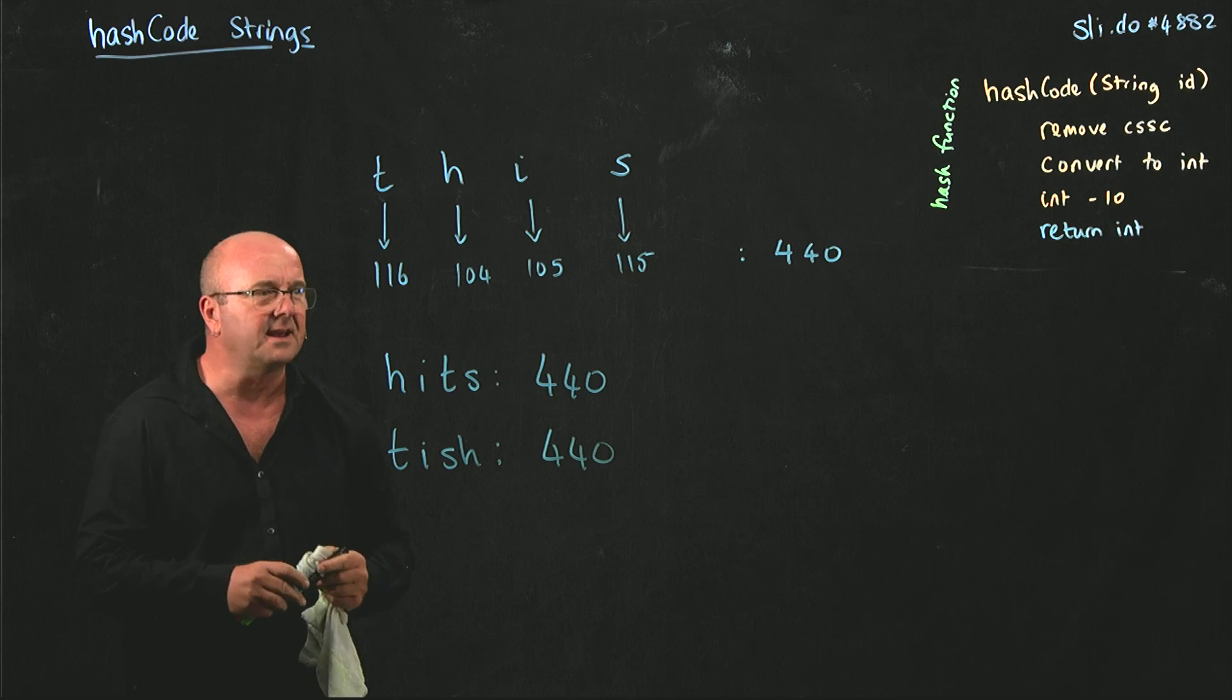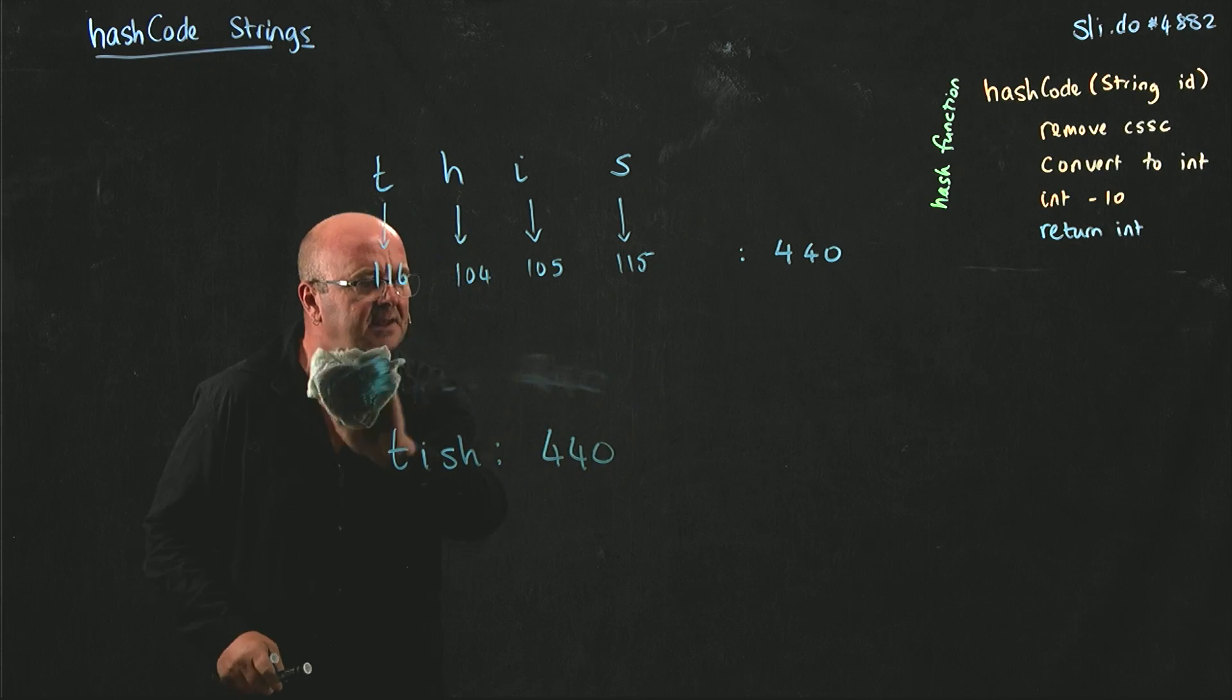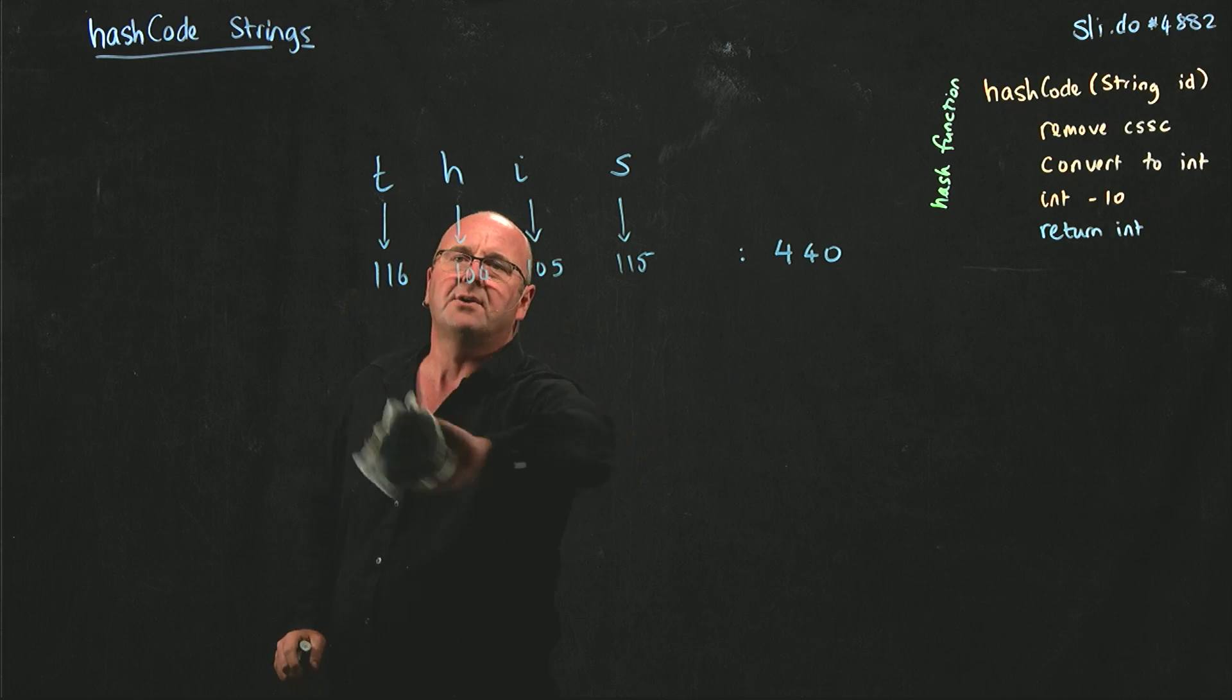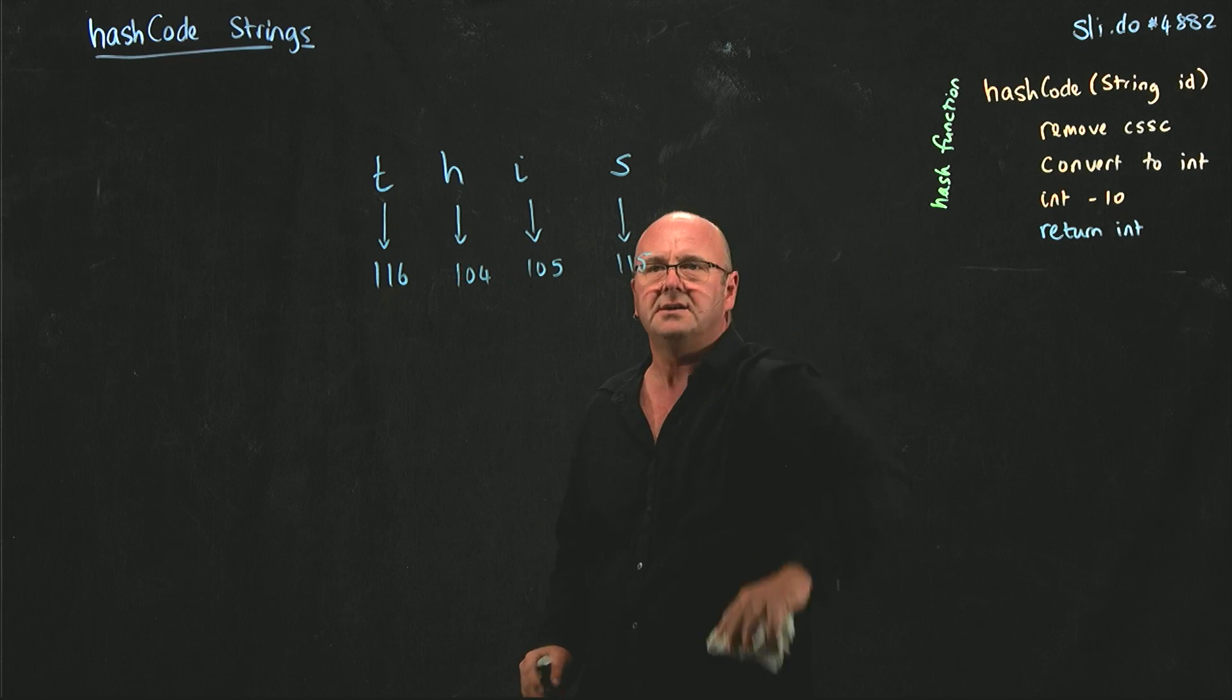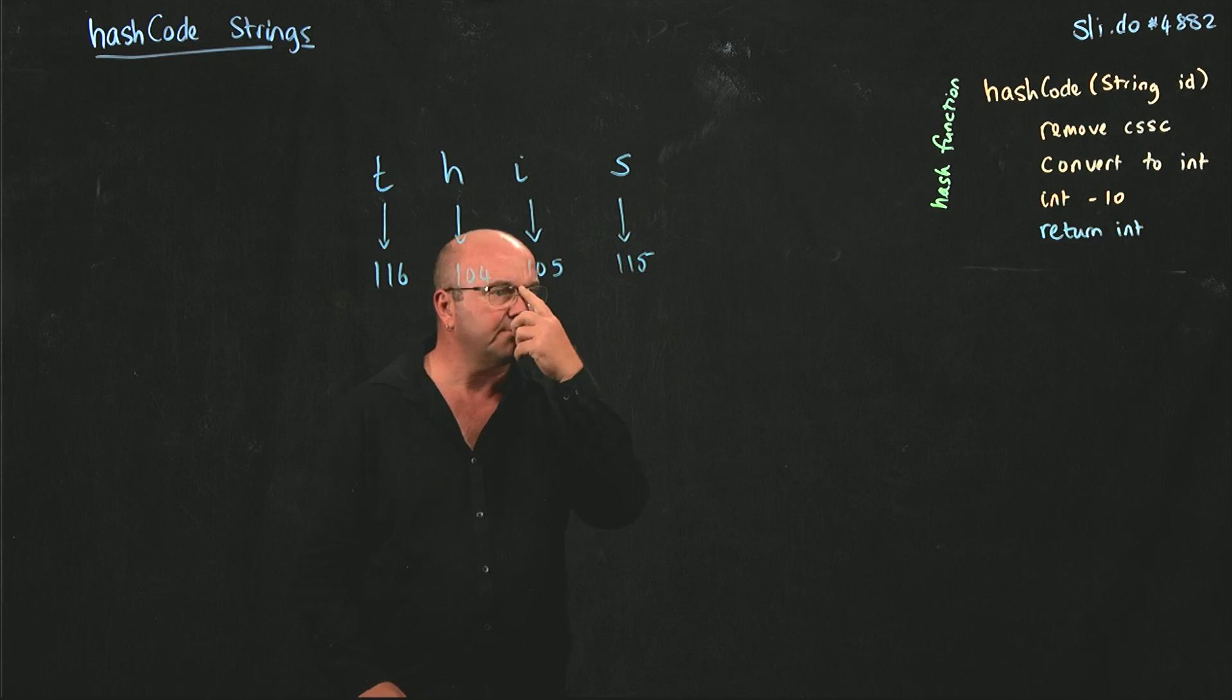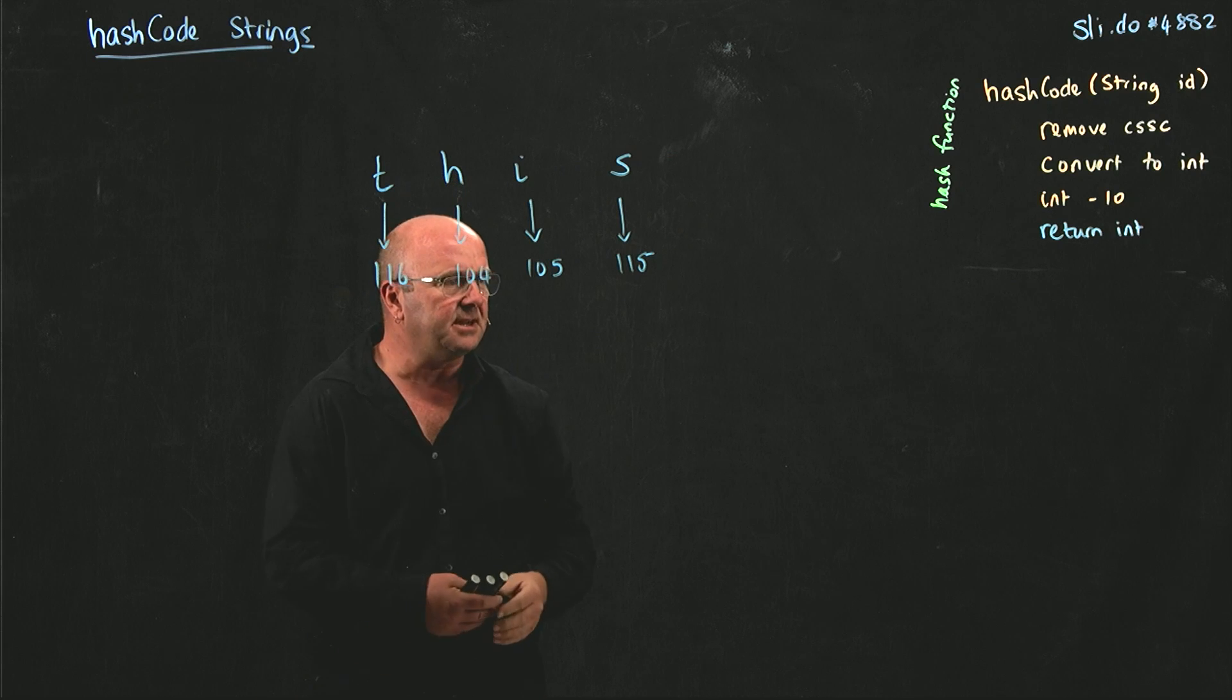So I get lots of collisions, right? Because every string is giving me the same answer. So just adding up the numbers isn't the best way to create an integer representation of the string. So what I want to do to separate things is perhaps include some notion of where the letter is in the string itself.